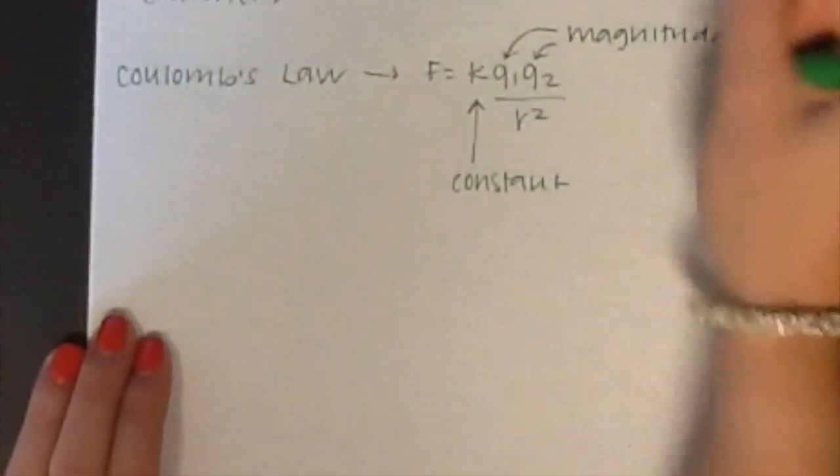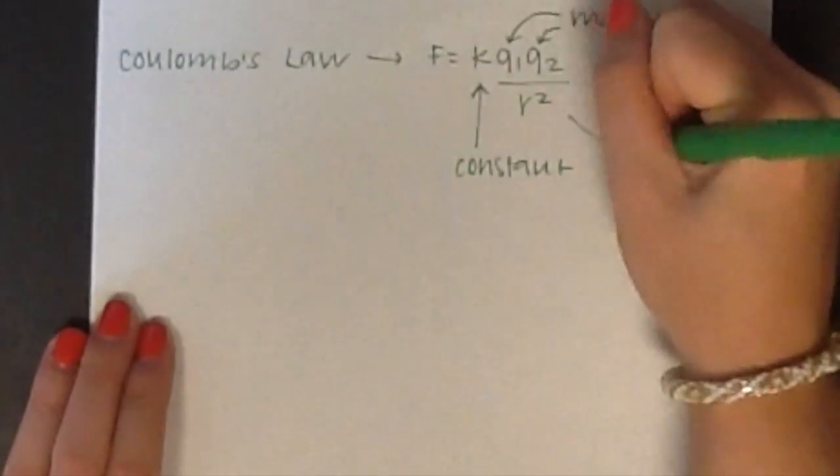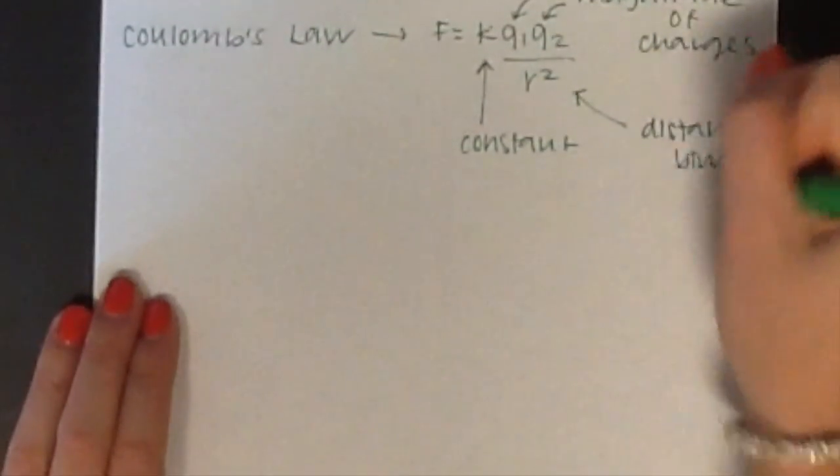Where K is a constant, Q1 and Q2 are the magnitudes of the charges, and R is the distance between the two charges.